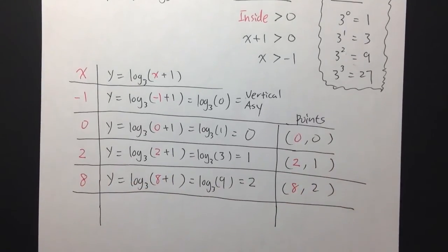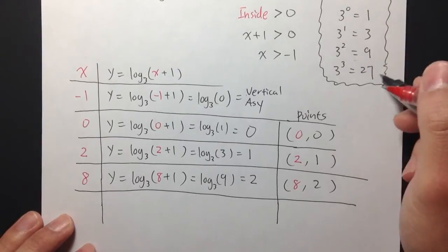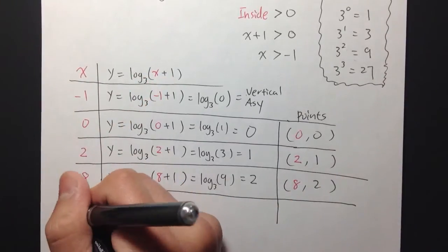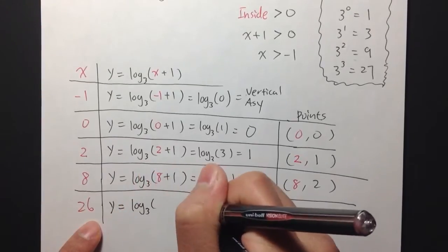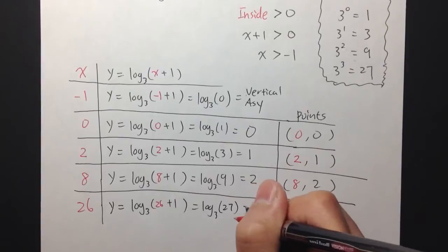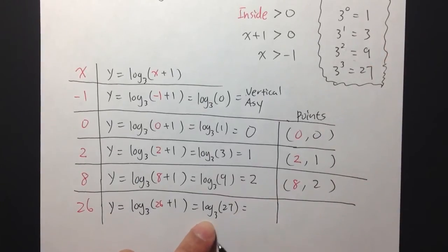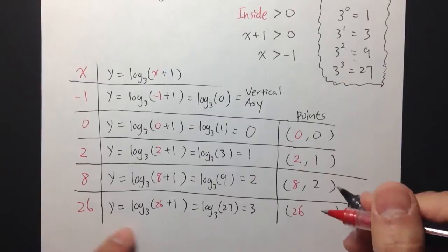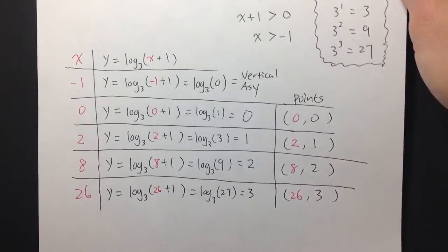Let's do one more. To produce a whole number y value, I need x plus 1 to equal 27. Since 26 plus 1 equals 27, I'll pick x equals 26. Then y equals log base 3 of (26 plus 1), which is log base 3 of 27. Since 3 to the 3rd power equals 27, the answer is 3. So my fourth point is (26, 3). This is enough information to graph the log function.